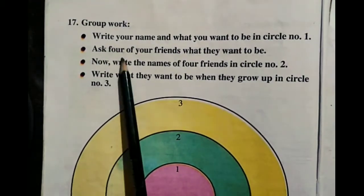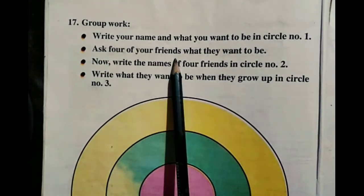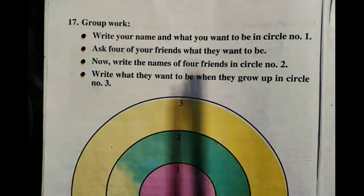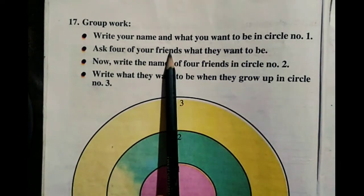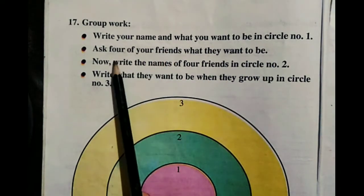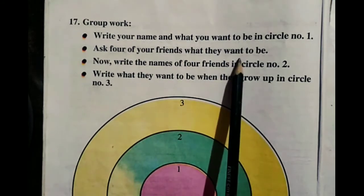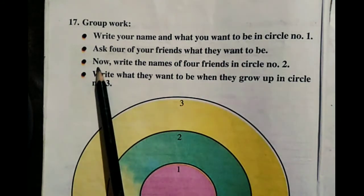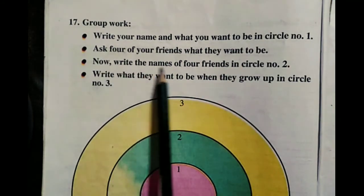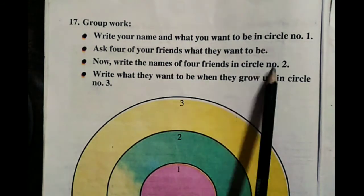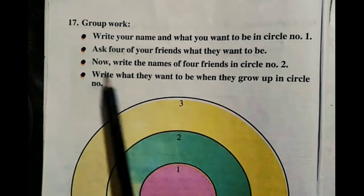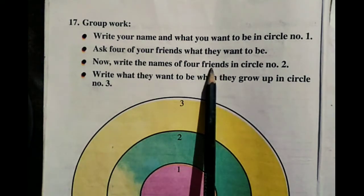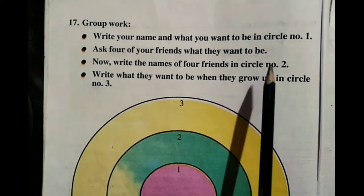Next, ask 4 of your friends what they want to be — what they want to be in circle number 2. Write the names of 4 friends in circle number 2.